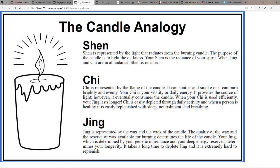There's a candle analogy that's used often where jing is represented by the wax and the wick of the candle. The quality of the wax and the reserve of the wax available for burning determines the life of the candle. Your jing, which is determined by your genetic inheritance and your deep energy reserves, also what you're taking in food-wise, determines your longevity. It takes a long time to deplete jing and is extremely hard to replenish, so conserving it is important.